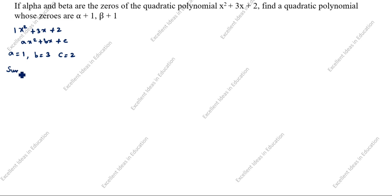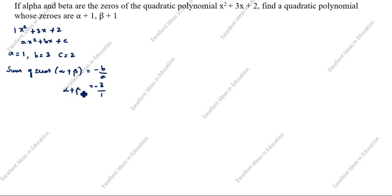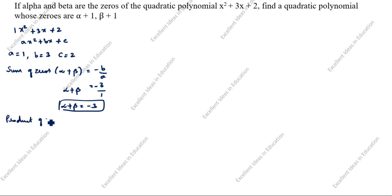What is the sum of zeros? Sum of zeros: alpha plus beta is equal to minus b by a. There is already a minus sign, so alpha plus beta is equal to minus 3. Next, product of zeros: alpha times beta is equal to c by a. c is 2, a is 1, so alpha beta is equal to 2.